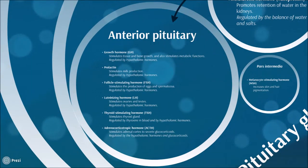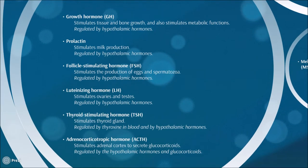In the anterior lobe we find the following hormones: growth hormone, a protein that stimulates growth especially in bones and also stimulates metabolic functions, regulated by the hypothalamic hormones. Prolactin, which stimulates milk production, also regulated by hypothalamic hormones. Follicle-stimulating hormone (FSH), which is a protein that stimulates the production of ova and sperm, also regulated by hypothalamic hormones.